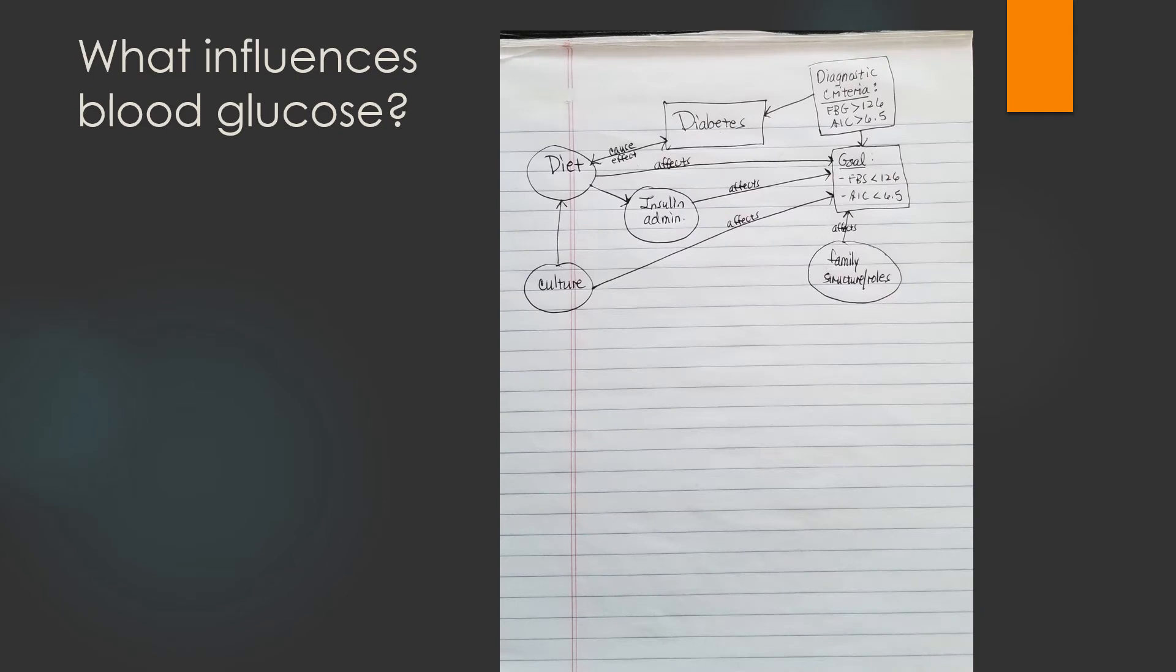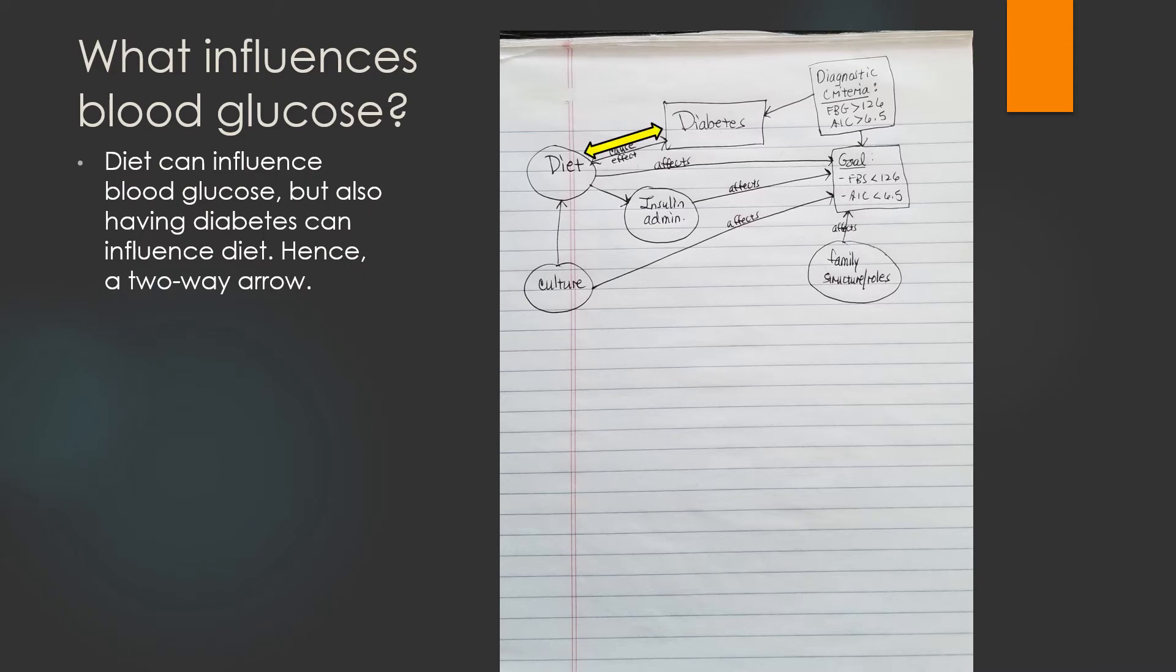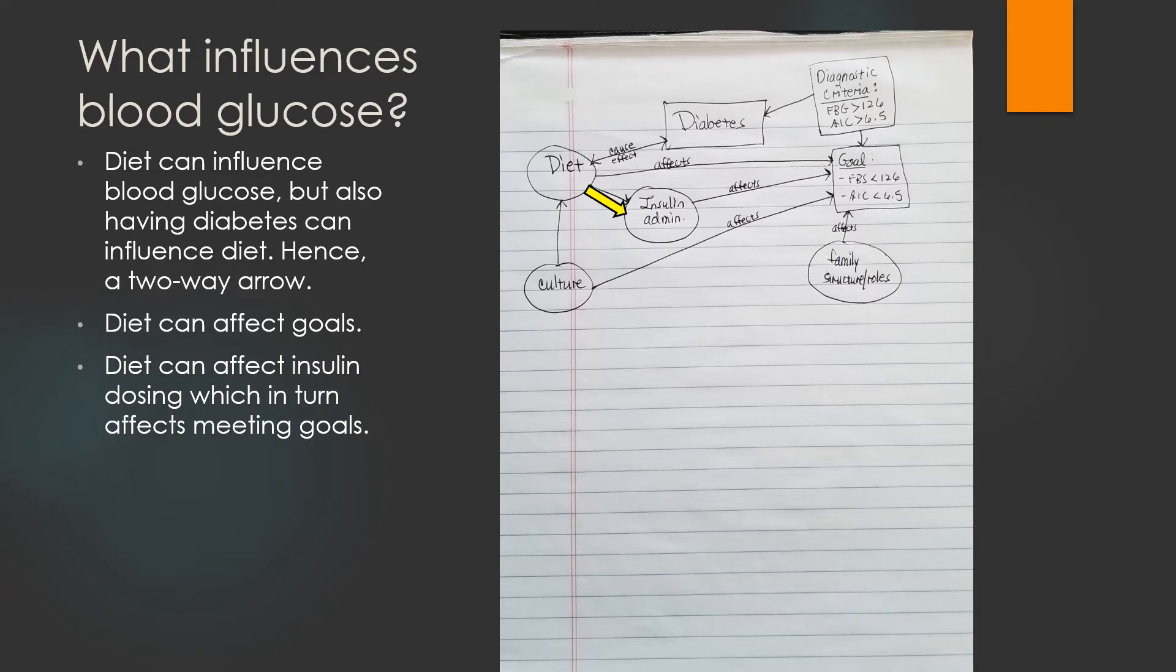What influences blood glucose? Here I added to the map four bubbles, each with a different item that influences blood glucose in a patient with a diagnosis of diabetes. The arrows illustrate interconnections between the items. Diet can influence blood glucose, but also having diabetes can influence diet, hence a two-way arrow. Diet can affect goals. Diet can affect insulin dosing, which in turn affects meeting goals. Culture can affect both diet and goals directly. Family structure and roles can affect the goals.